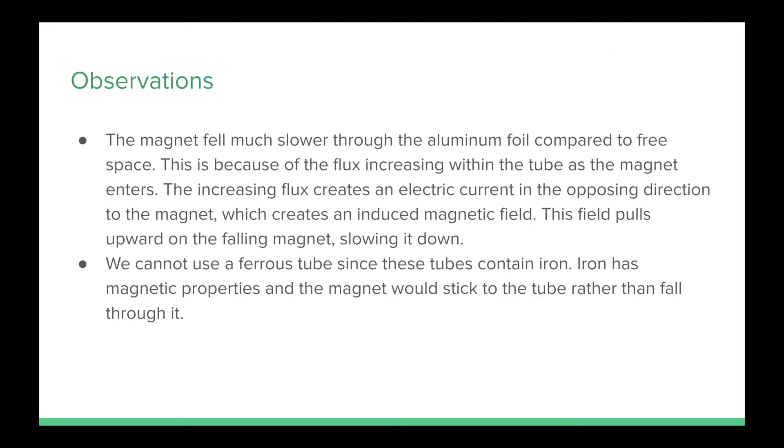During the lab, some observations were made about the magnet falling through the tube. The magnet fell much slower through the aluminum foil compared to free space. This is because of the flux increasing within the tube as the magnet enters. The increasing flux creates an electric current in the opposite direction to the magnet.